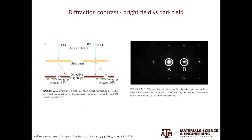Moving to the second type of amplitude contrast: diffraction contrast. I'll just give you a taste here because we will spend a lot of time on this topic in the future. The key takeaway is that when you are trying to get microstructure information from diffraction contrast, you always tilt the crystal to the two-beam condition, as shown by the diffraction pattern on the right. You can see the intensity of the diffracted beam B is similar to the intensity of the direct beam A. This makes micrograph analysis and interpretation much easier.